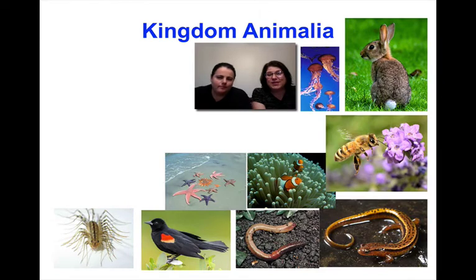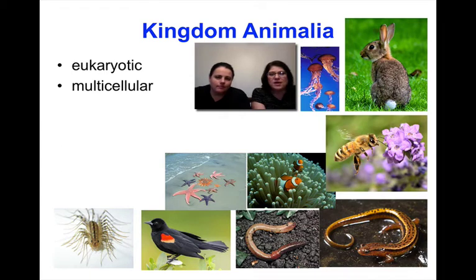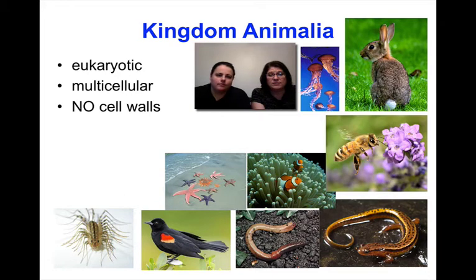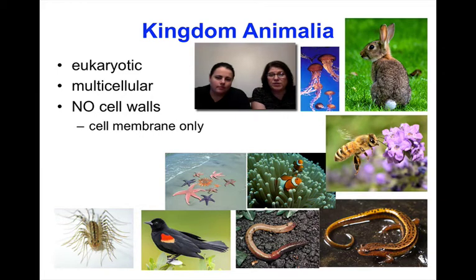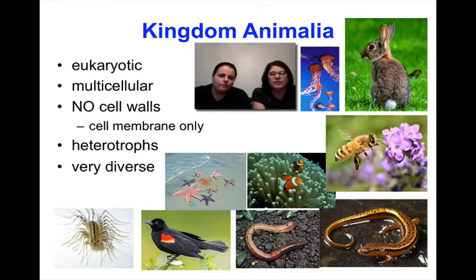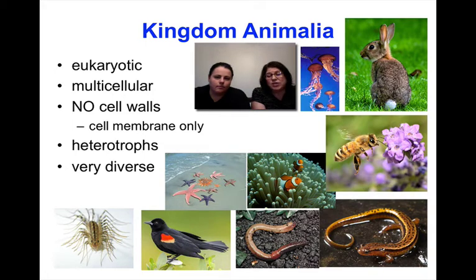Next is kingdom Animalia, the animal kingdom — we're pretty familiar with this kingdom because this is where we belong as humans. Every animal is eukaryotic, meaning they're made of those large complex cells, and they are multicellular. Animal cells do not have a cell wall; our outer covering is just our cell membrane. We are heterotrophs, meaning we have to eat to get our energy — no photosynthesis here. Animals are also very diverse, with many different types making their livings in very different ways.